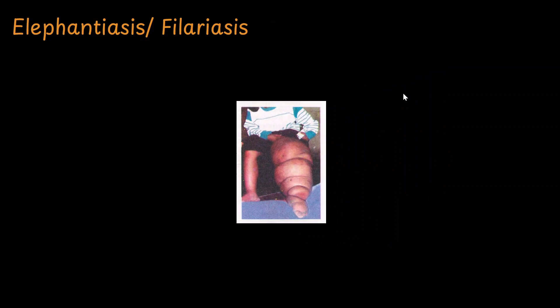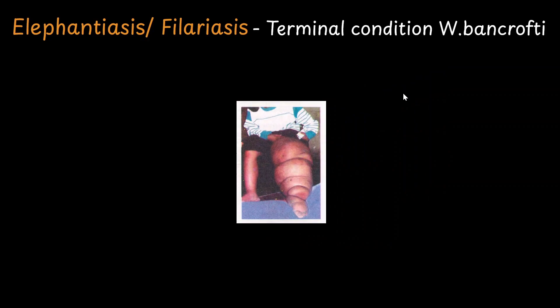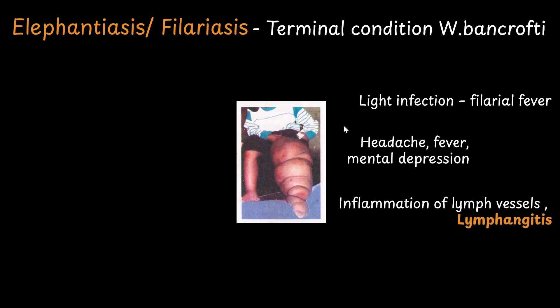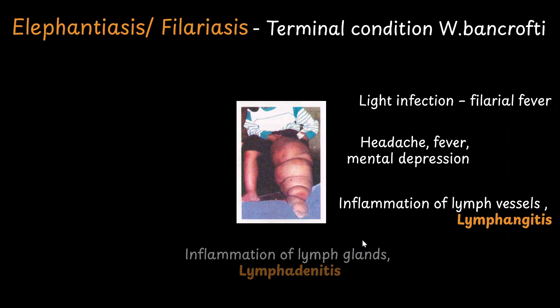Elephantiasis is the terminal stage in the infection of Wuchereria bancrofti. It starts with a light infection where it causes filarial fever, characterized by headache, fever, as well as mental depression. But as the worms reproduce and increase in number, it starts inflaming the lymph vessels, causing lymphangitis. It also inflames the lymph glands, causing lymphadenitis.